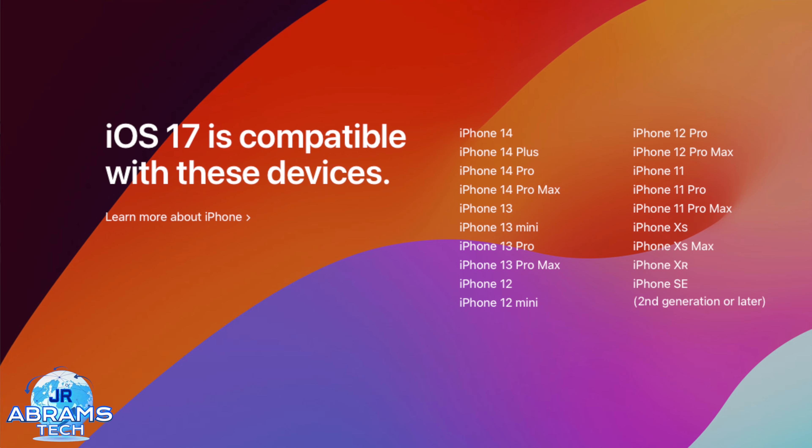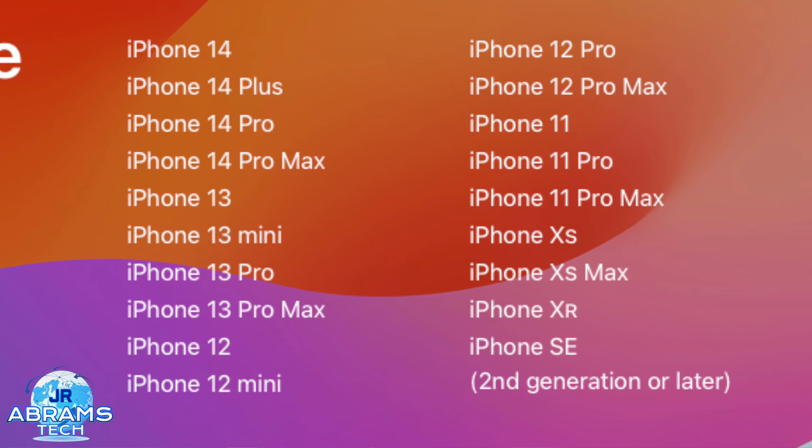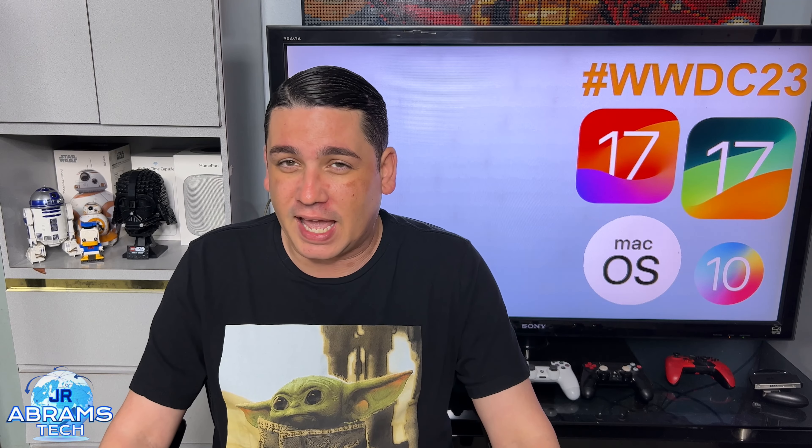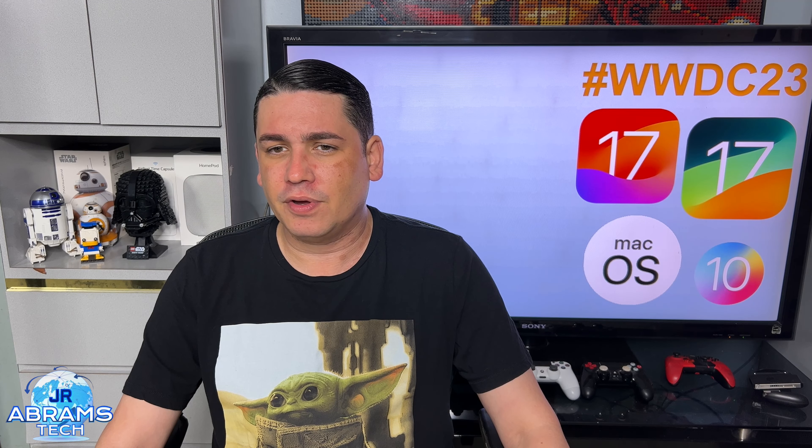iOS 17 will be available for all devices you can see on your screen right now, and it should be released when the iPhone 15 gets released. It is very important to note that this is finally the end of software updates for the iPhone X — the first phone Apple removed the home button for has finally stopped receiving updates. We're on iPhone 15 now, so that's six years of software updates. That's very nice, Apple — I've got to give it to them.